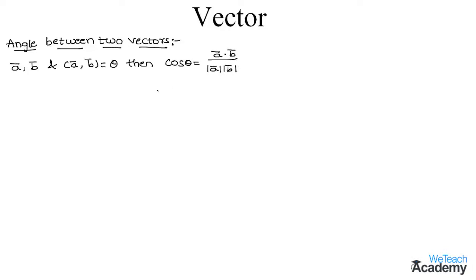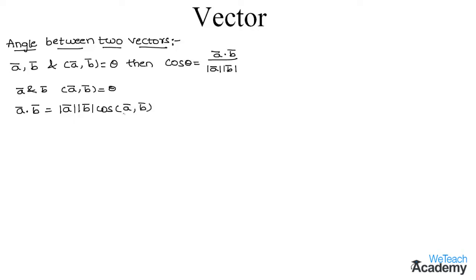Let us prove this theorem. We know that a bar and b bar are two vectors and the angle made between them is theta. From the definition of the dot product, a bar dot b bar is equal to mod a bar into mod b bar into cos of the angle between them, which gives us a bar dot b bar equals mod a bar into mod b bar into cos theta.